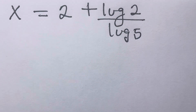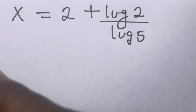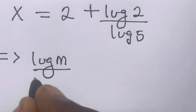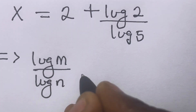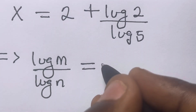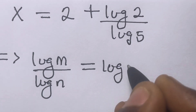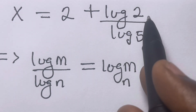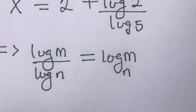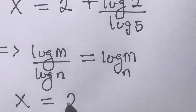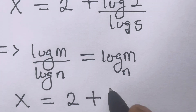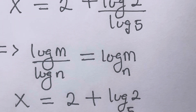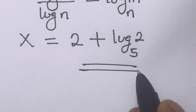We have to note that from the change of base law, log m divided by log n equals log m in base n. Applying this, we will have x equals 2 plus log 2 in base 5. Guys, this is our final answer.